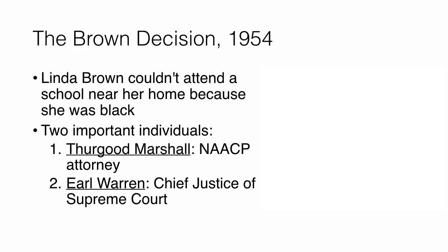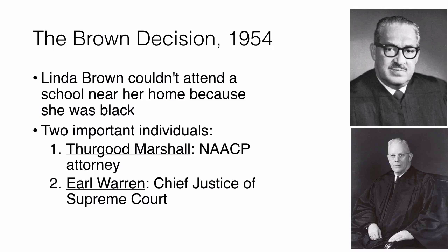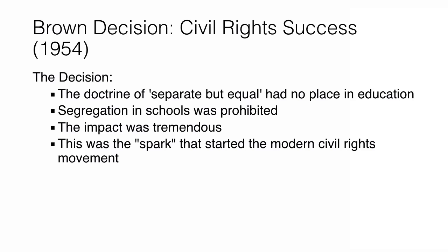In the Brown case, Linda Brown wanted to attend a school near her home, but because she was black, she had to be bused to a different section of the city. Two important individuals from this time are Thurgood Marshall, an attorney for the NAACP, and Earl Warren, the Chief Justice of the Supreme Court. Both favored the decision to desegregate public schools. The 1954 decision established that separate but equal has no place in public schools and that segregation should be prohibited — schools should be fully integrated.